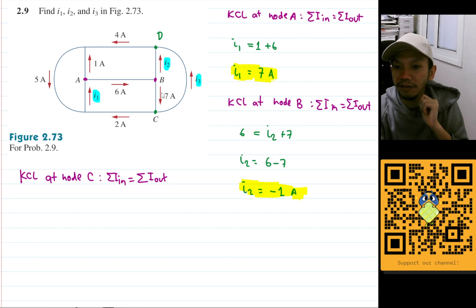The current that goes in is only this one which is 7, so I will have 7 there and that will equal to... So i3 will be 7 minus 2 and that will be i3 is equal to 5 amperes.